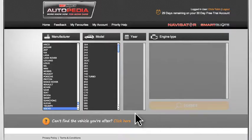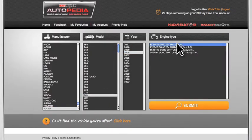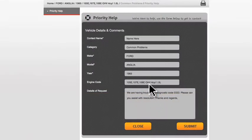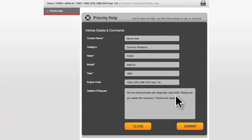If there's no information available on Autopedia, the category will be greyed out. No problem. Simply click on the greyed out icon and a tech help request form is generated.